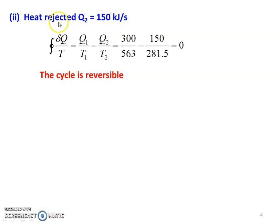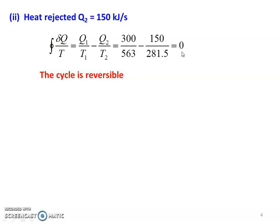For the second subdivision, heat rejected is 150 kilojoules per second. The cyclic integral of δQ/T equals Q1/T1 minus Q2/T2, which equals 300/563 minus 150/281.5, and this equals 0. When δQ/T equals 0, the cycle is reversible.